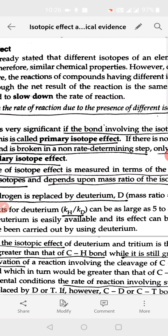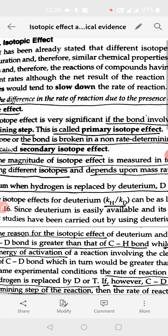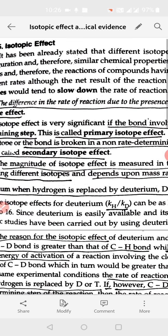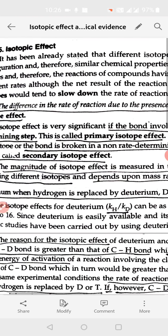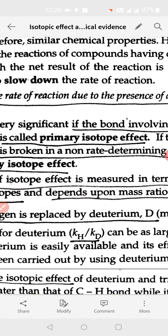As you know, various isotopes of an element may be present. Because they have the same electronic configuration, their chemical properties are the same. But due to the greater mass of the isotope, the reaction gets slowed down.